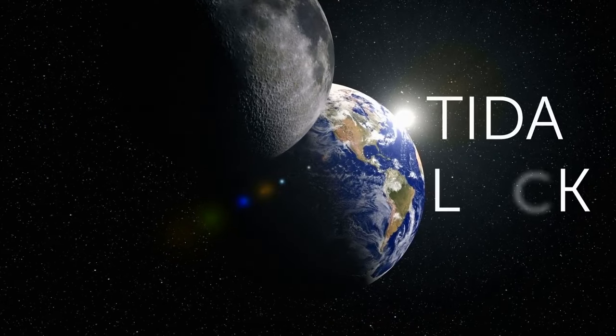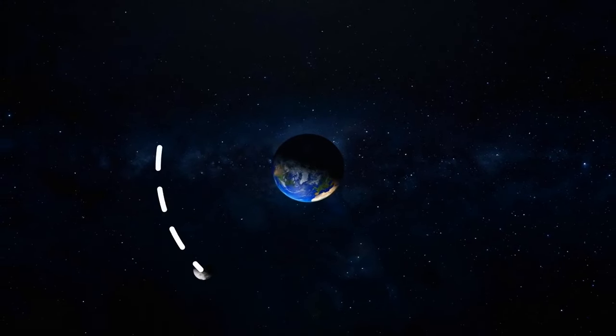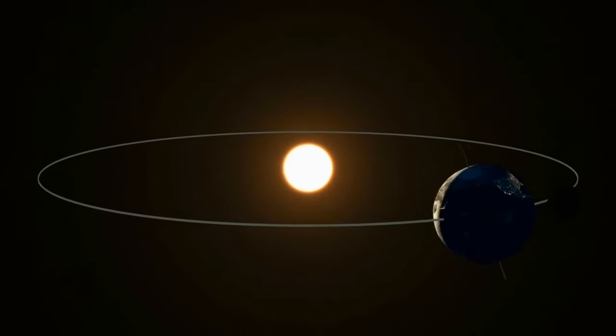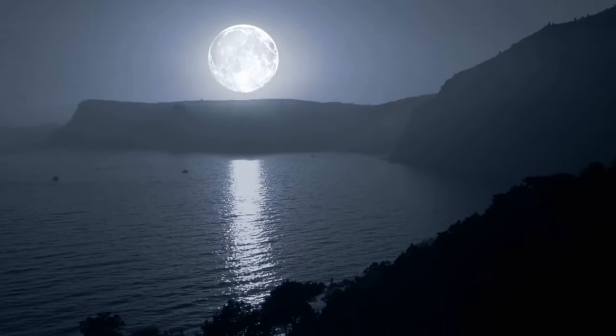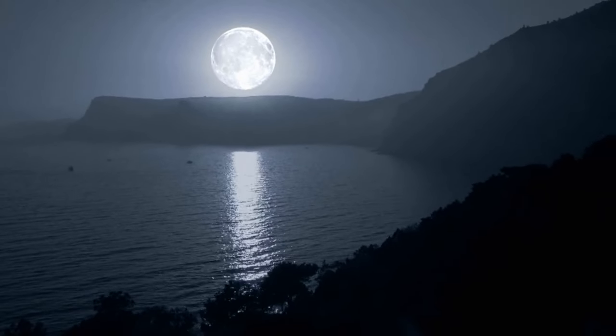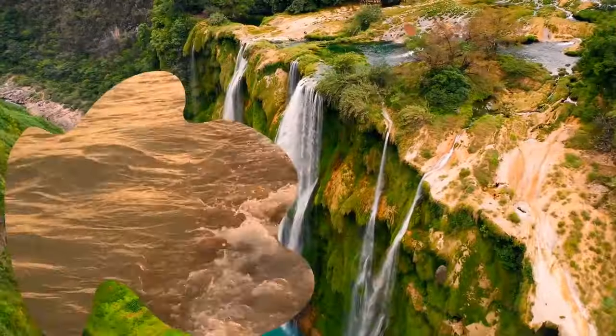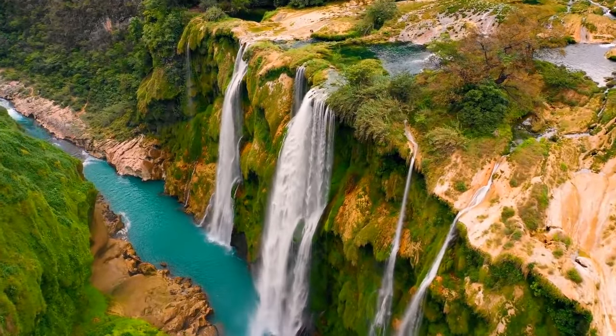When the moon moved away, tides on Earth became calmer. Now water could flow to the most remote corners of our planet. It was then that life appeared on Earth. But back to the evolution of the moon itself. What was happening on its surface after its formation? The next stages of the moon's development were childhood and adolescence, and, as is usually the case at this stage, this period was insane.